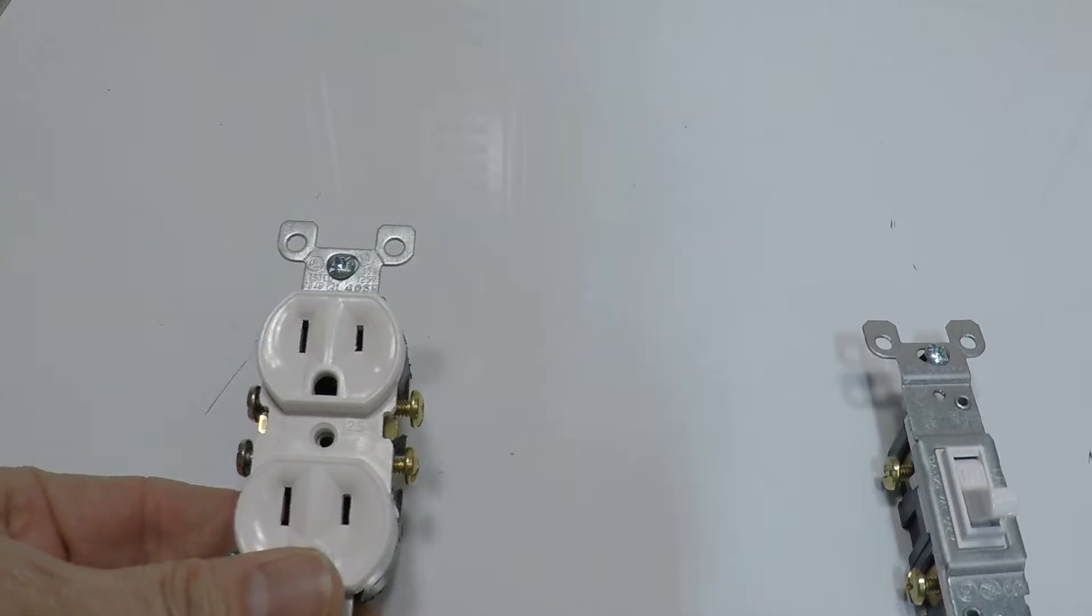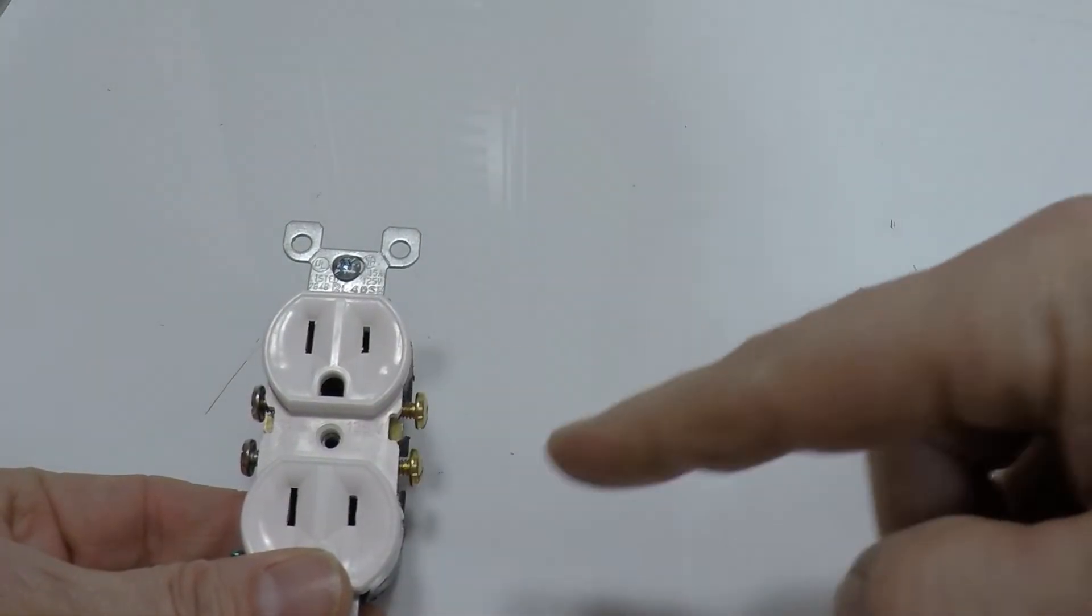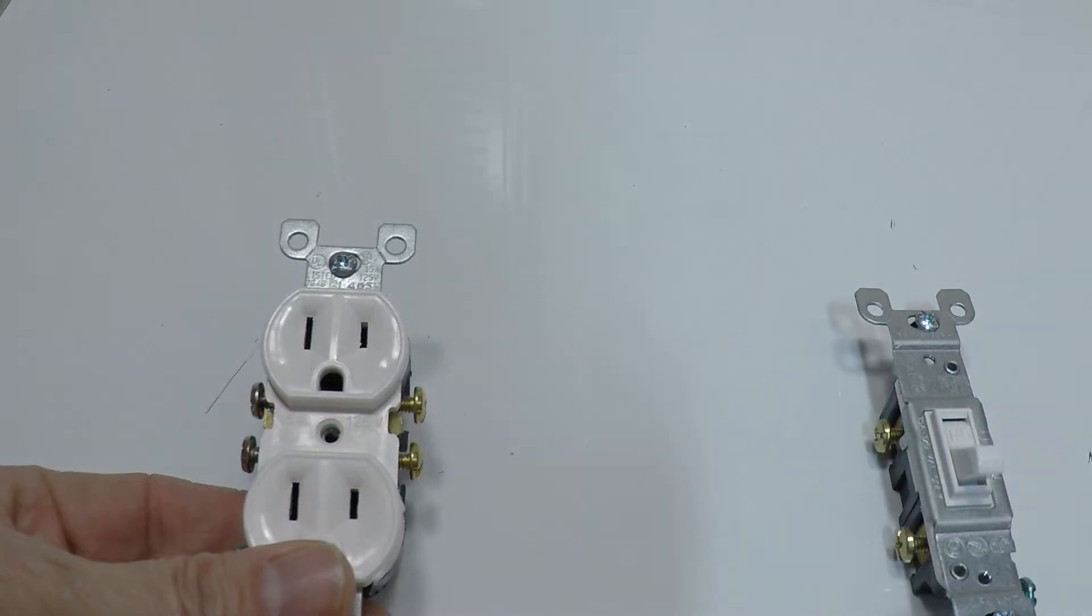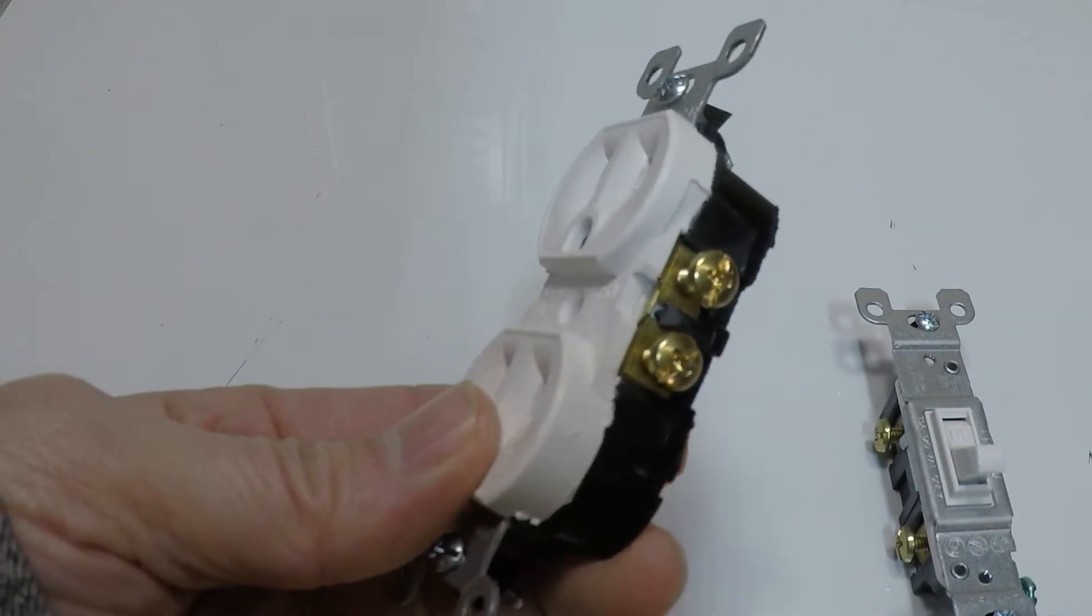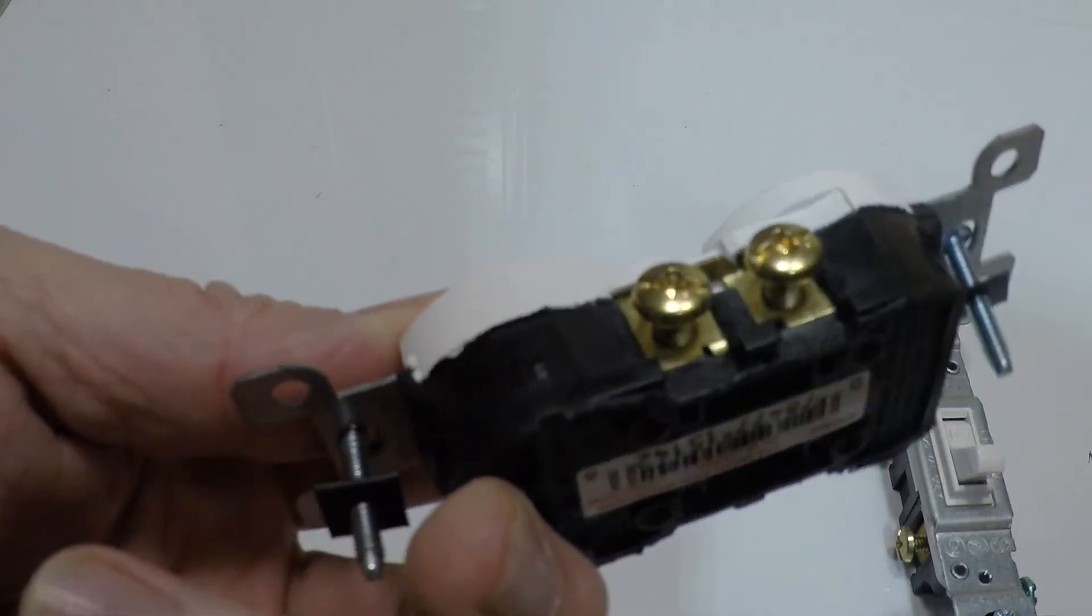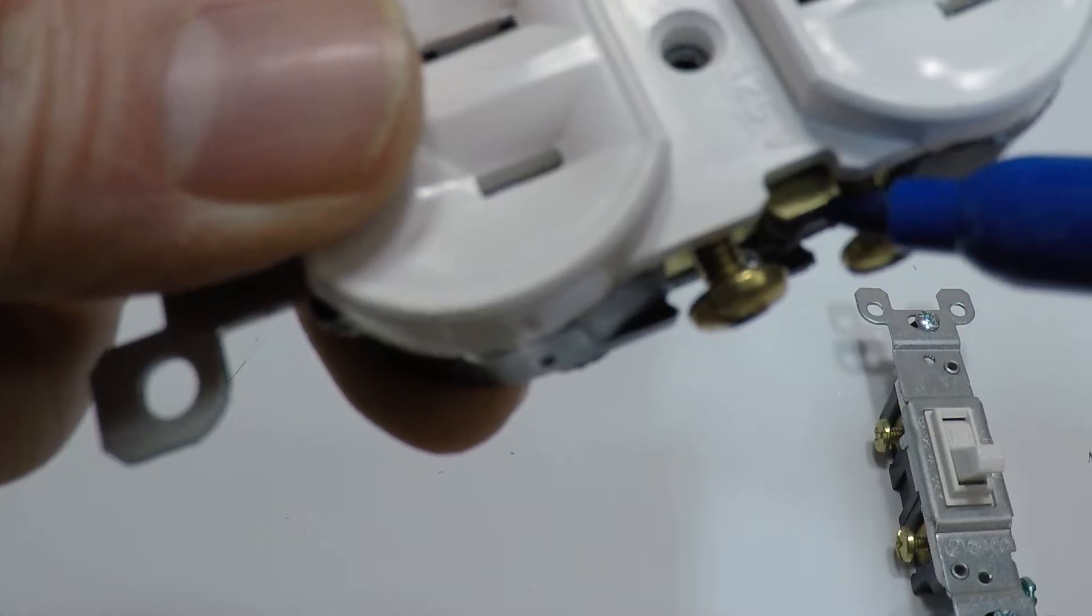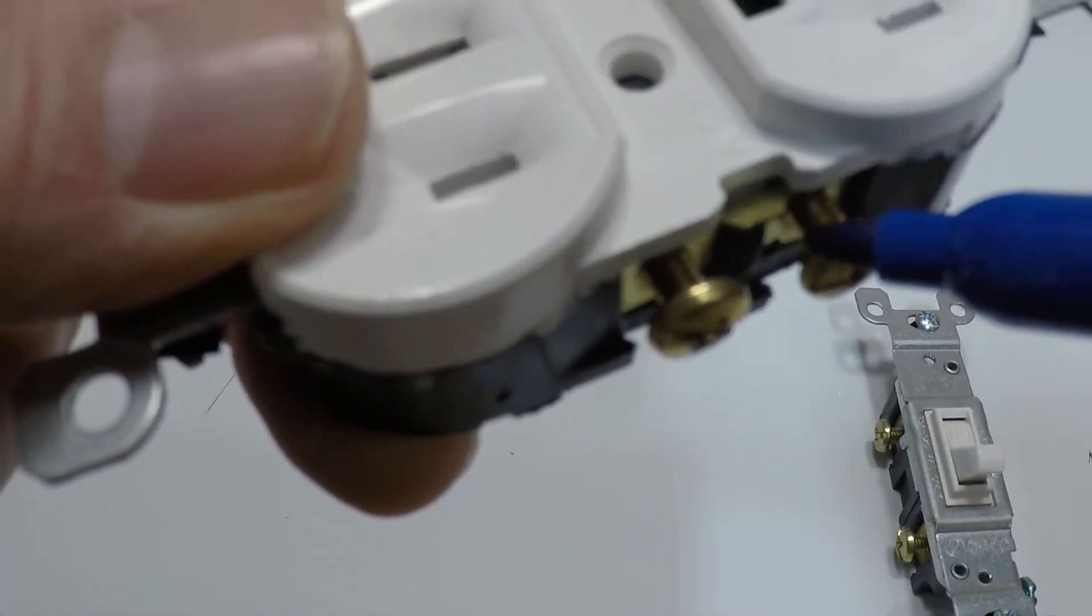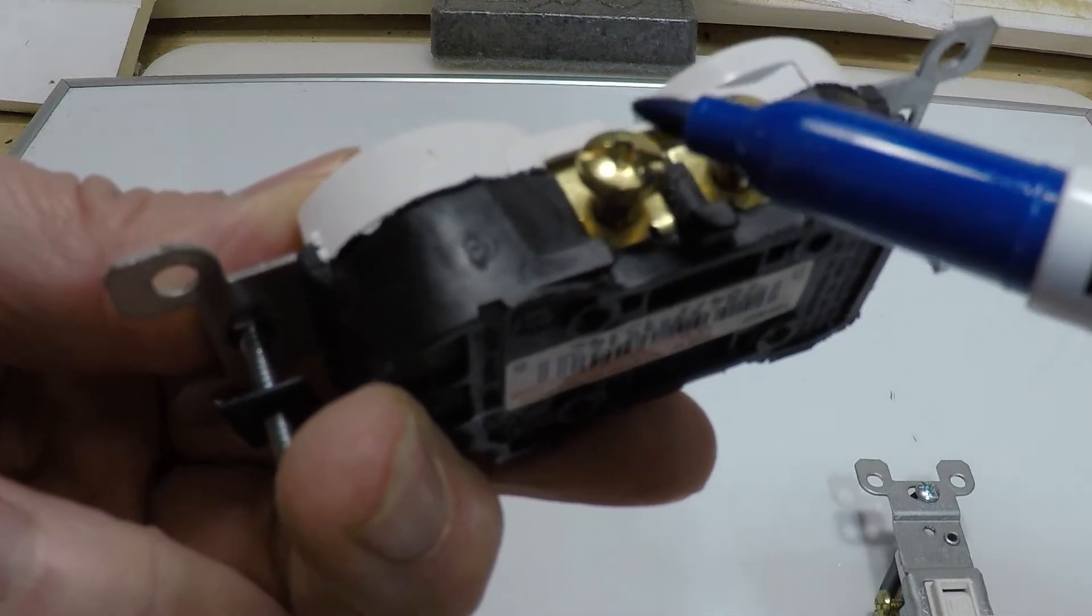So the reason why you're able to control one portion of this outlet with a light switch is this little spot right here. I'm gonna use this marker—this little piece of metal here, you see this sticking out right there? That bridges the gap between this screw and this screw, and it's the same thing on the other side.